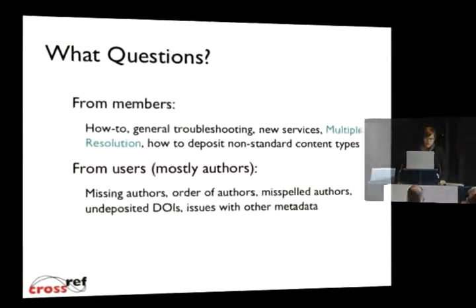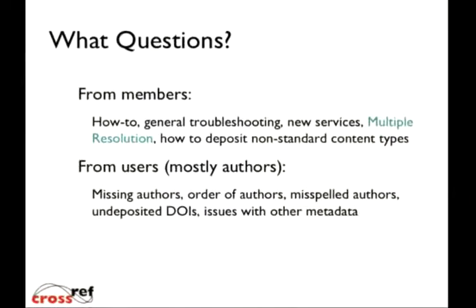We continue to have a very busy support queue. Most questions are pretty routine, but some can be interesting. We've seen a big increase in tickets from end users in the past year, as opposed to just from members. CrossRef metadata is becoming much more visible through integrations like WorkIt and other projects, and people are finding us to report errors. We've also had increased interest in multiple resolution for both books and journals, so I'm going to go over multiple resolution for journals as it exists now. Mike is going to talk in more detail about mutual access solutions for books.